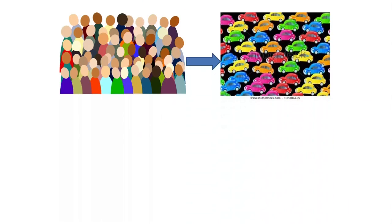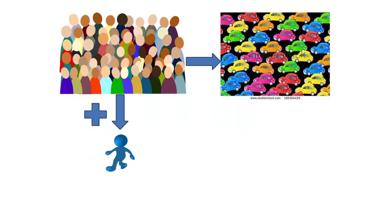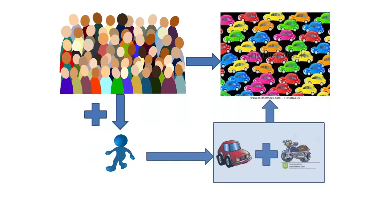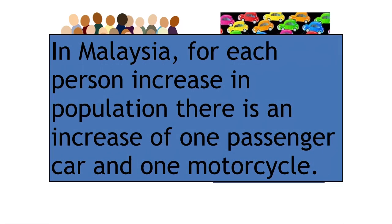Developing countries that experience an increase in income level are also witnessing high increases in population and vehicle registration rates. For example, in Malaysia, there is an increase of about one passenger car and one motorcycle for each person added to the population.